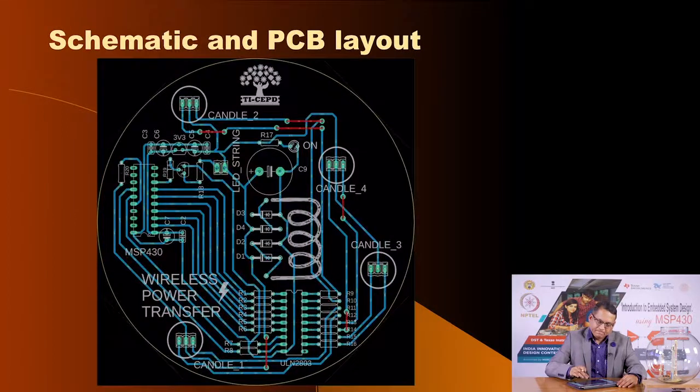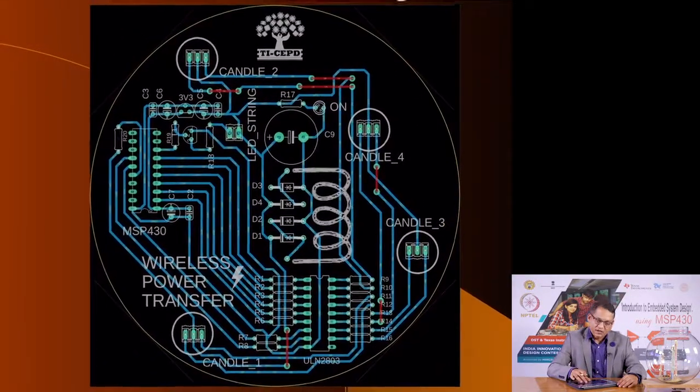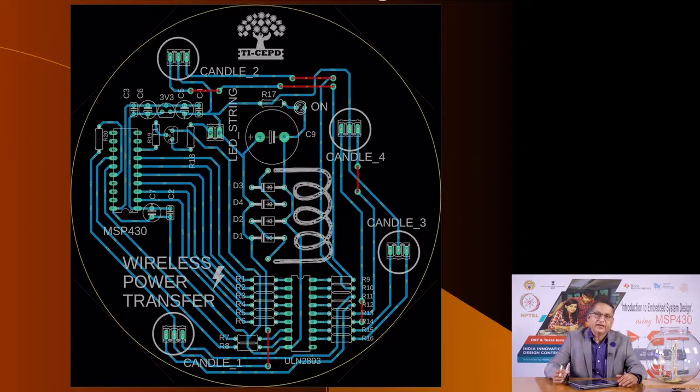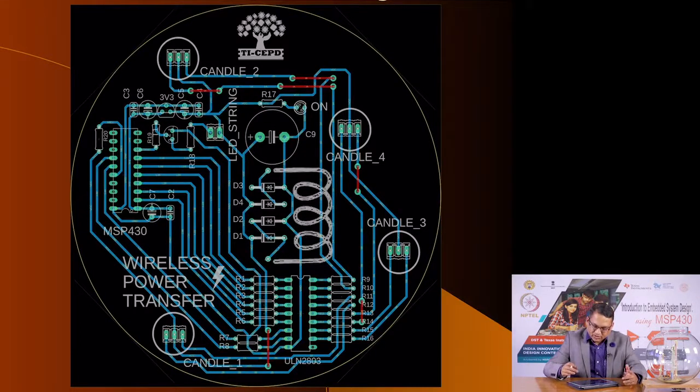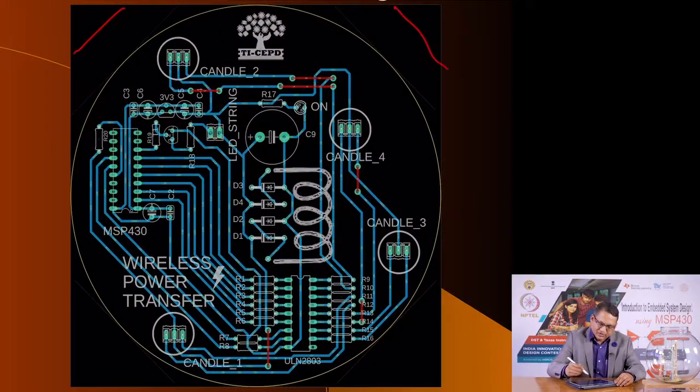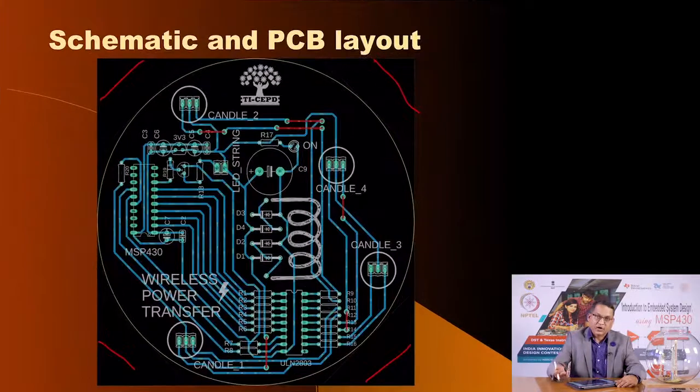The PCB was implemented as a single-sided board. Blue lines indicate tracks and red lines indicate jumper wires where signals must cross. The board uses only about six jumpers. Cutting a circular PCB is a challenge; although we have a CNC machine in the lab, we wanted it achievable with basic tools. So instead of a circle, we cut a square that inscribed the circle and then cut off the corners with a hacksaw, resulting in an octagon shape.